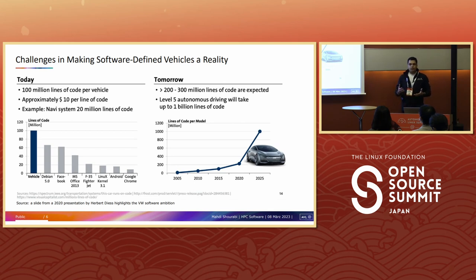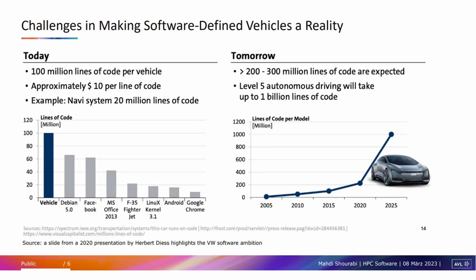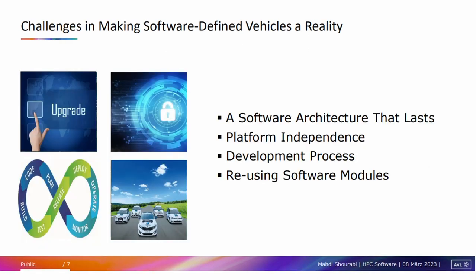One measure of this is how many lines of code a normal vehicle has compared to other systems. In this chart you can see that a normal vehicle nowadays has more than 100 million lines of code. Comparing this to Android, it is less than two million lines of code. By implementing the SDV concept, it is going to be tripled — maybe more than 300 million lines of code — so we're going to face huge complexity in the SDV topic, and there are also other challenges.